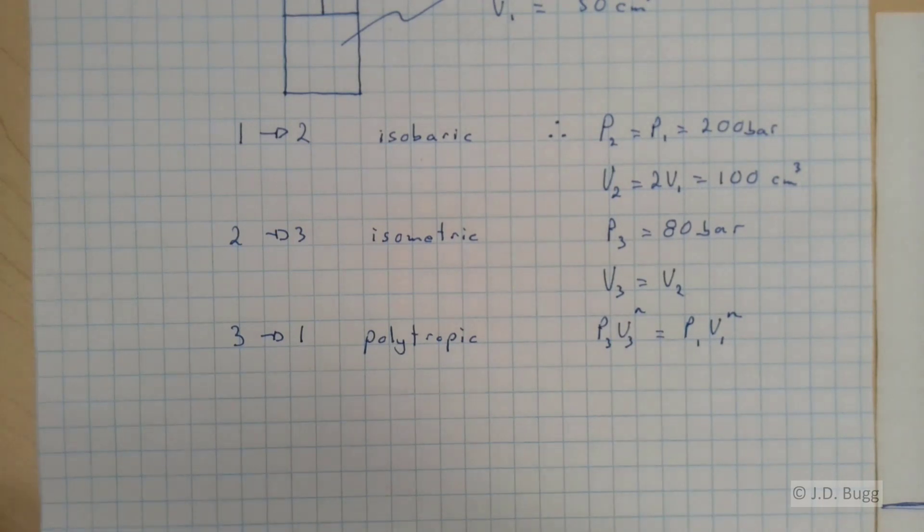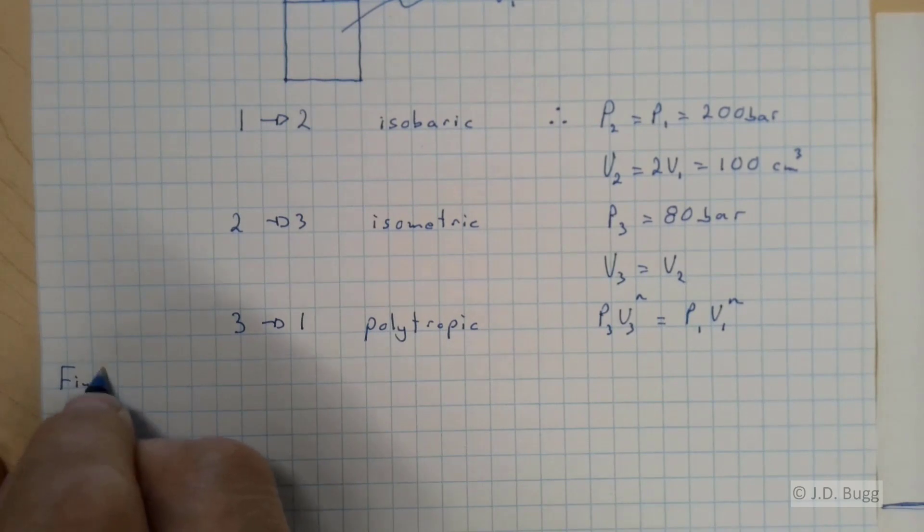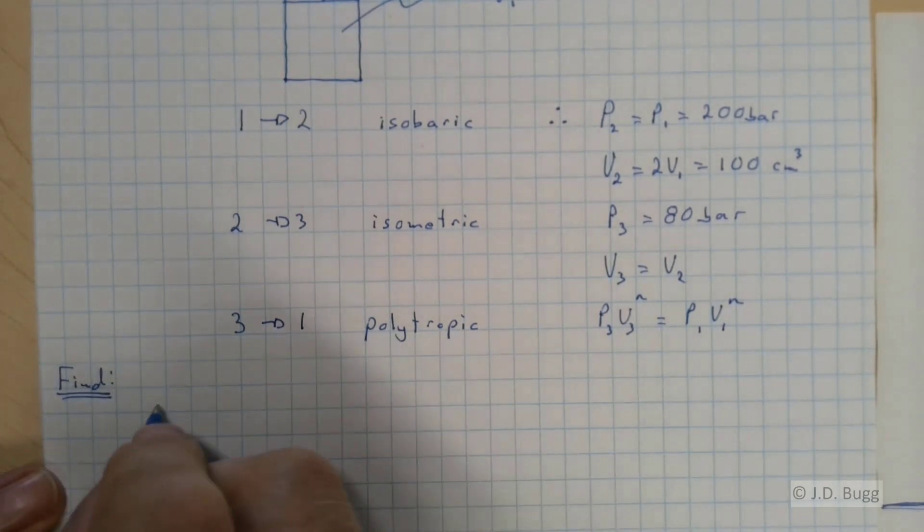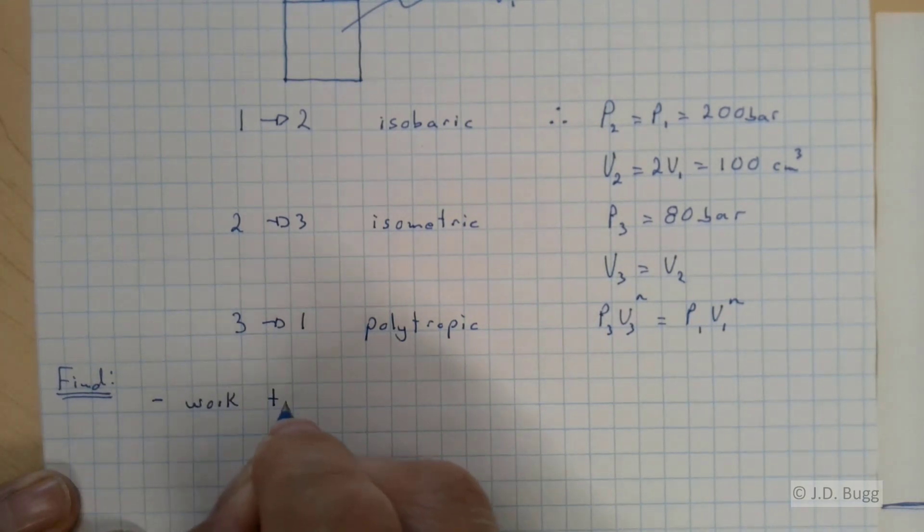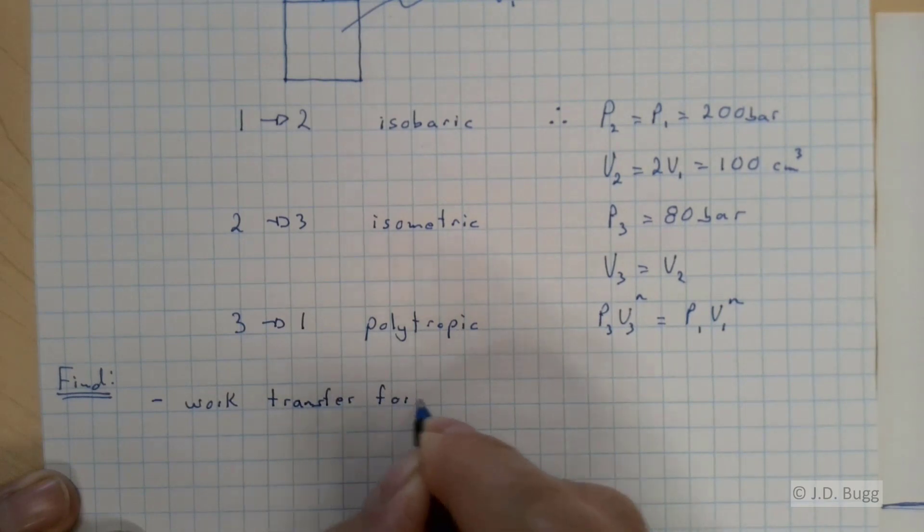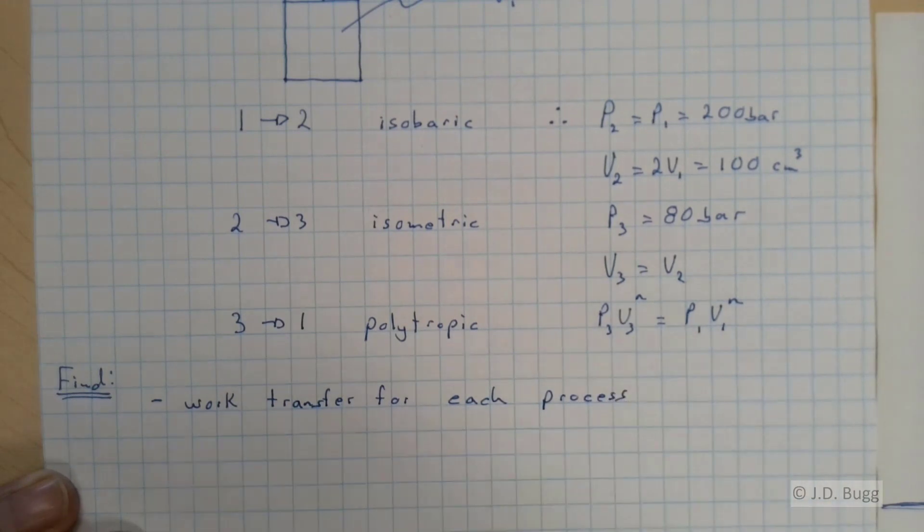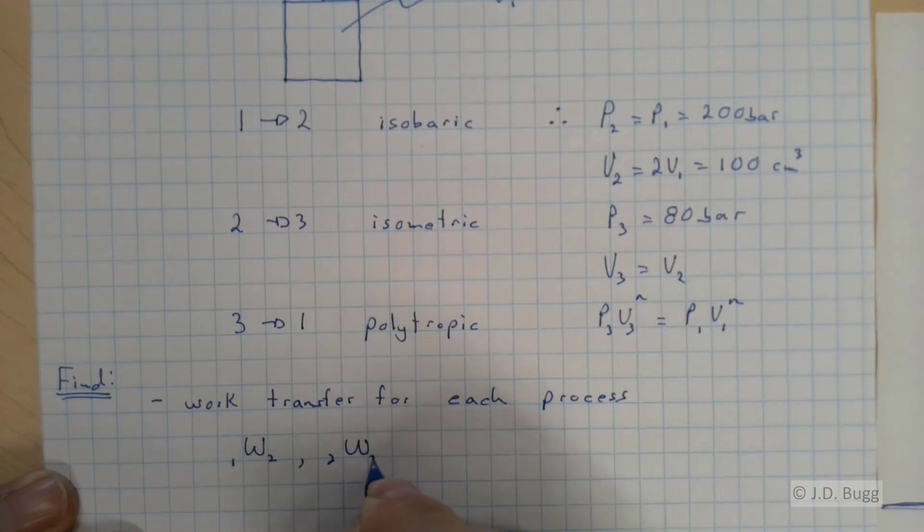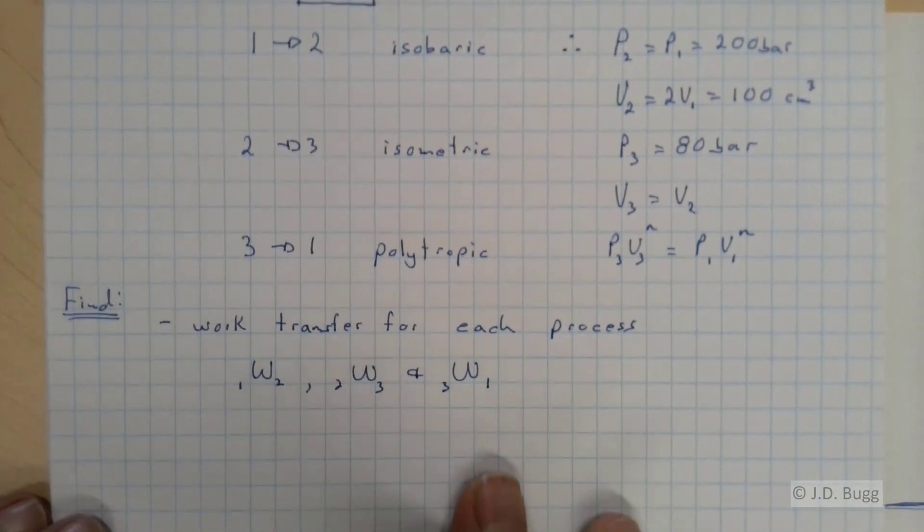So that's all of our given information. What were we asked to find? We're asked to find the work transfer for each process. And so that's the work from 1 to 2, the work from 2 to 3, and the work from 3 to 1.